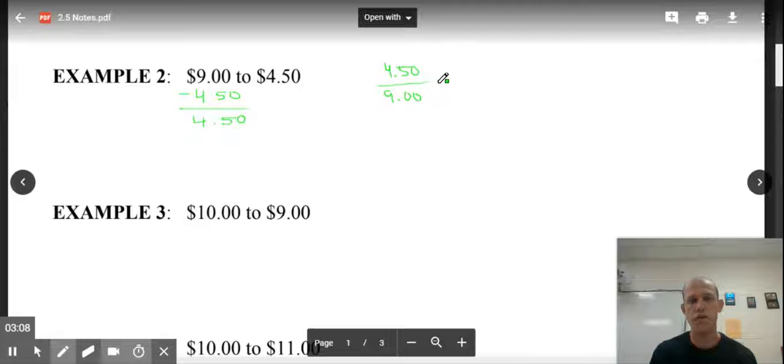When I divide those, I will get out the number 0.5. 5 tenths or 50 hundredths. This is 50%. So did I increase or decrease? I went from $9 to $4.50. That would be a decrease. I went down. So this was a 50% decrease.